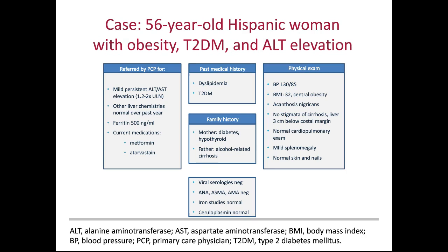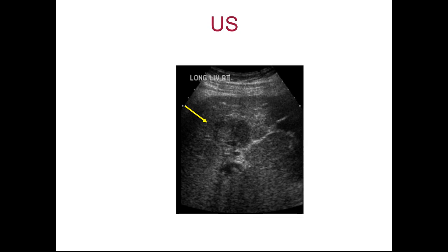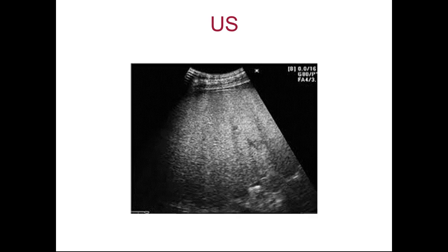She has mild splenomegaly. Not unusual — someone with transaminase elevations — she went for an ultrasound. The ultrasound showed parenchymal changes suggestive of probable cirrhosis, and she also had a liver mass about 3 centimeters in diameter. So she went for an MRI scan, a liver protocol MR. This just shows what an ultrasound with fatty liver would look like, where you have bright signal from the liver — an echogenic liver with steatosis.